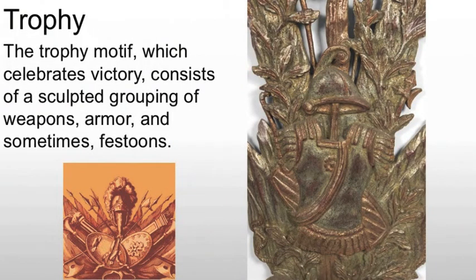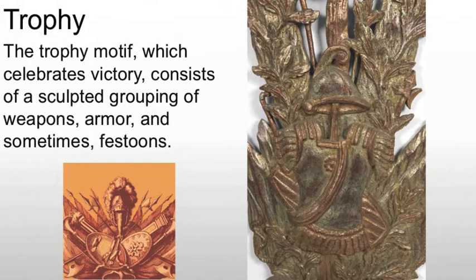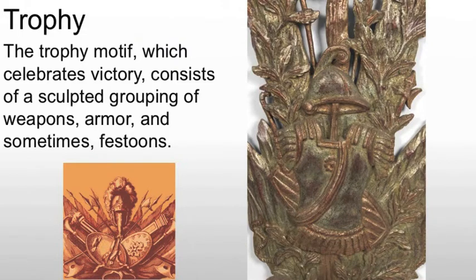Then we have the trophy motif, which celebrates victory. This actually comes from the Greeks. The ancient Greeks, when they won a major victory, would put together the armor of the enemy and display it — basically, 'look, we were victorious over these people.' These trophies are based on that principle. You'll see sculpted groups of weapons, armor, etc., and it's always a symbol of victory in some way. It may be that someone holds an office. You see these, for example, sometimes in the Vatican, referring to the fact that the Pope was victorious or triumphant in becoming the voice of God.